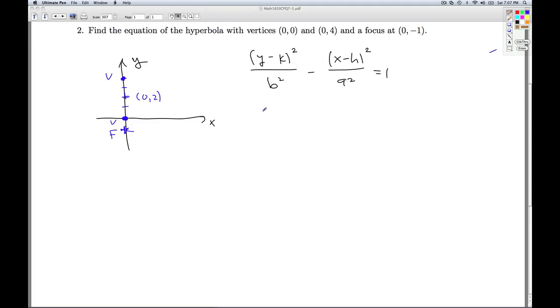So that tells us that the k, in this case, is 2, and the h, in this case, is 0. What else can we get from this diagram? How far is it from the center to each vertex? Well, that's 2. So that's how far I'm moving in the y direction from the center to each vertex. That tells me that the b is 2, so the b squared is 4.